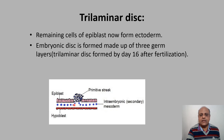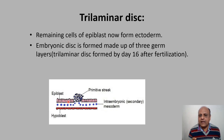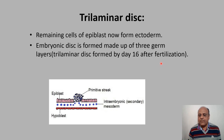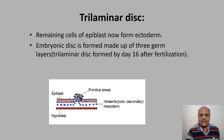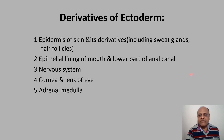The remaining cells of the epiblast now form ectoderm. So primitive streak cells have formed the intra-embryonic mesoderm and the endoderm, while the remaining epiblast cells give rise to ectoderm. In this way the embryonic disc is now made up of three germ layers — the trilaminar disc is formed by day 16 after fertilization, comprising endoderm, mesoderm, and ectoderm.